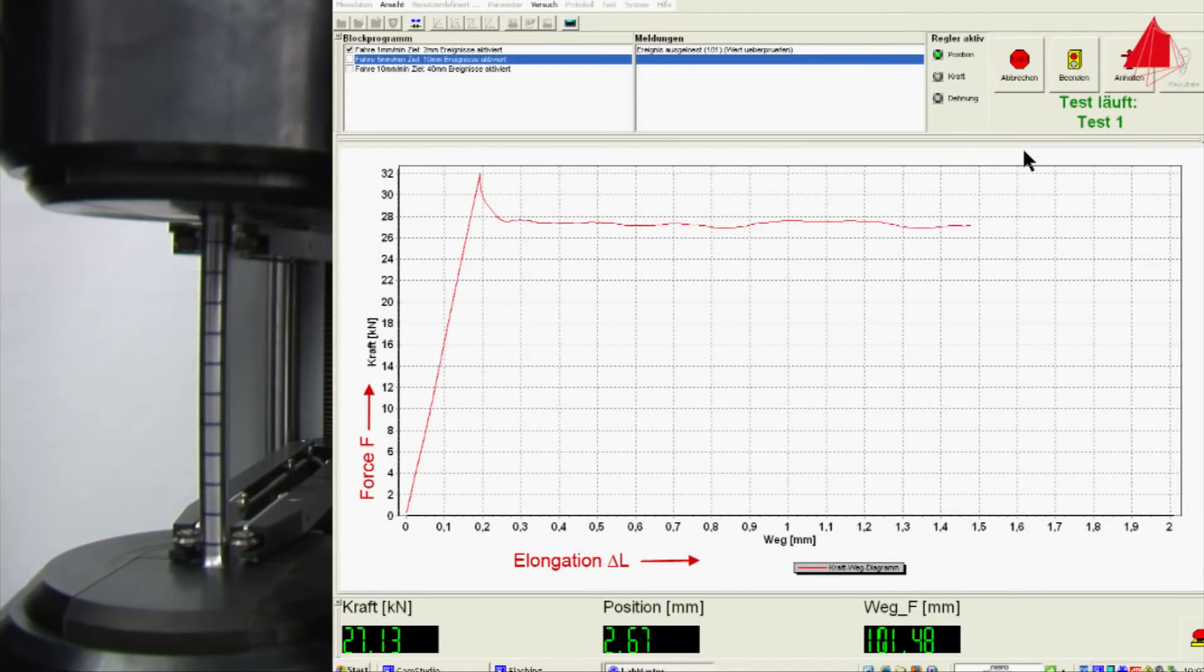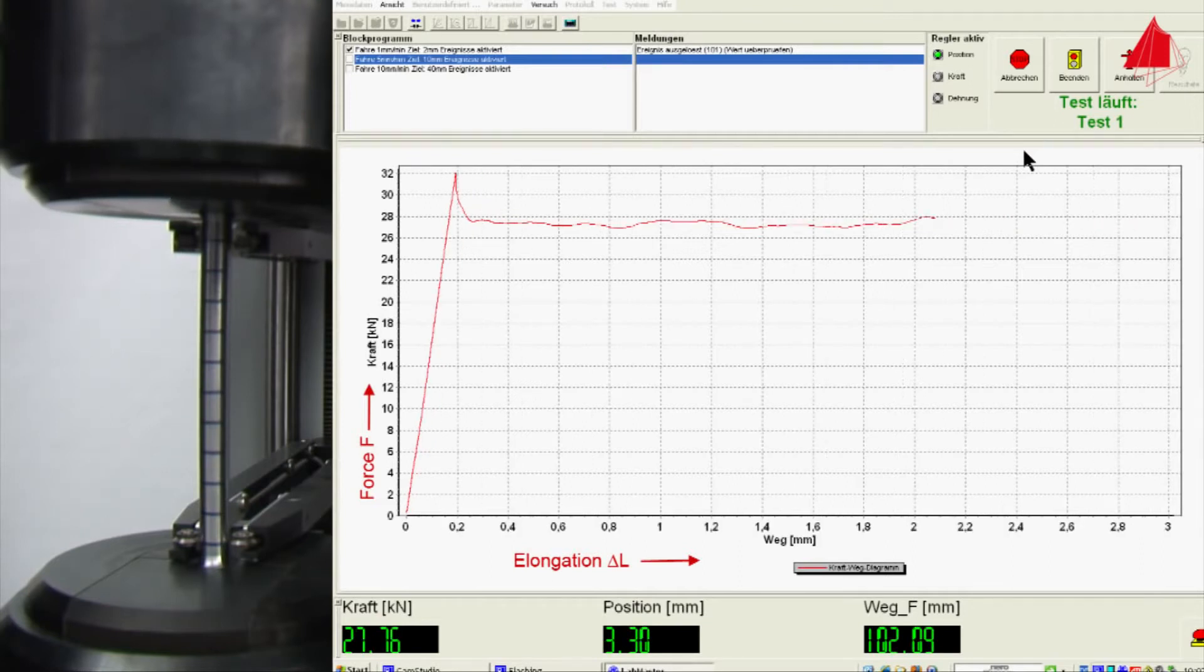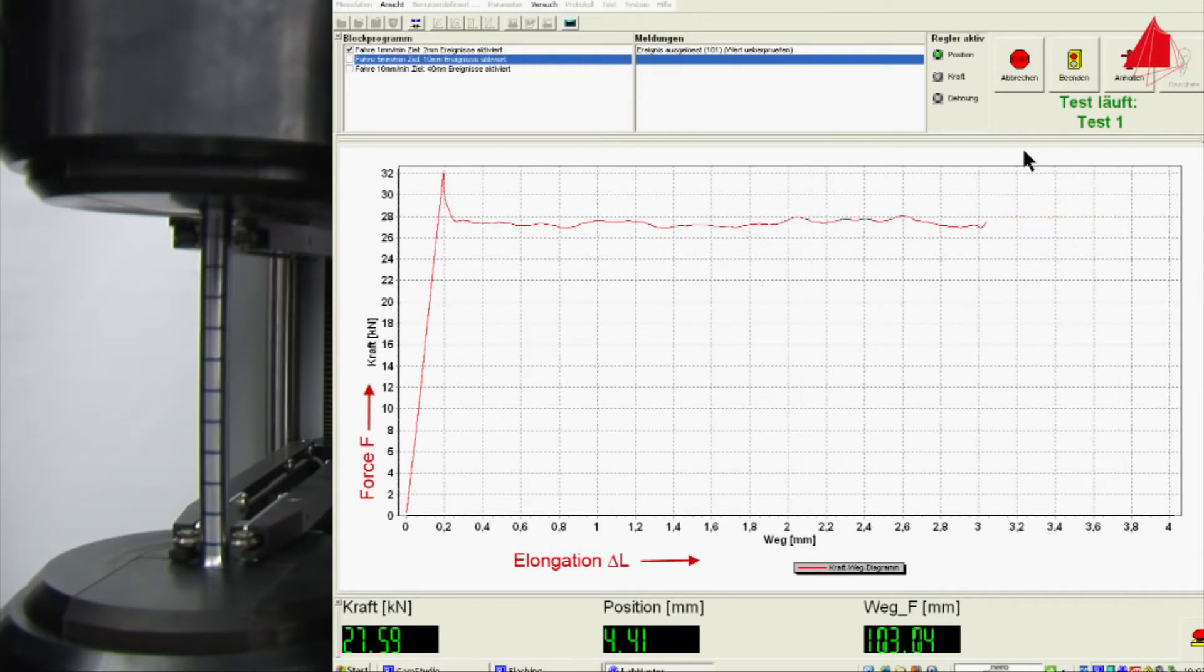In the next stage of the tensile test, an almost constant force level with slight fluctuations occurs. This phenomenon is called the Lüders effect. After a certain strain, known as the Lüders strain, the force increases again. The material opposes an increasing force against the imposed elongation. It strain hardens.